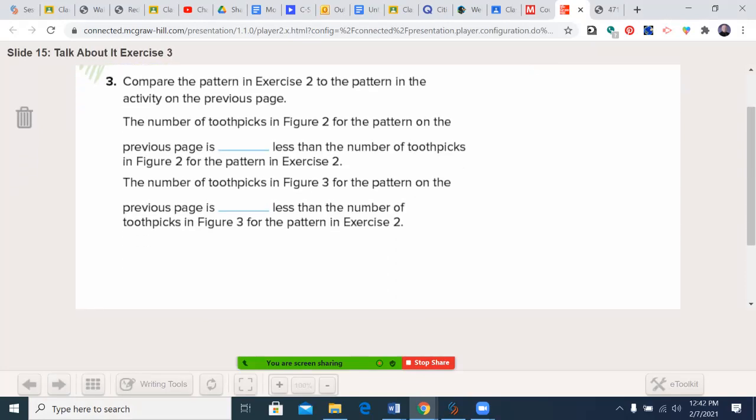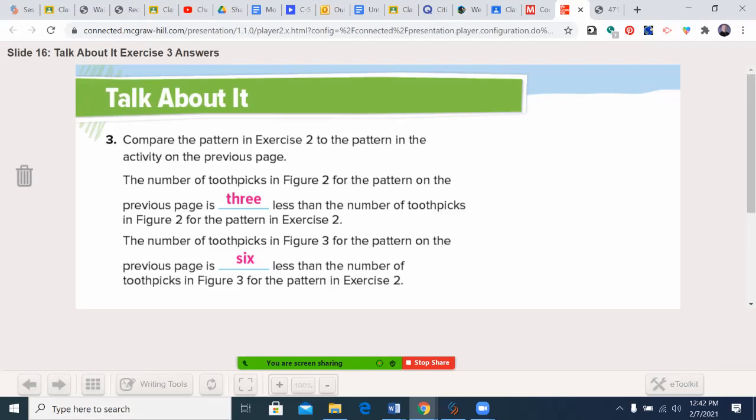Compare the pattern in exercise two to the pattern in the activity on the previous page. In the previous page, the number of toothpicks in figure two is blank less than figure two for exercise two. In figure two originally was seven, in this case it was 10, so it was three less. For figure three, it's six less. For figure four, it's nine less. That will give you an example that obviously in the second activity, it's going up at a much higher rate. It's going up three plus another three on each one.